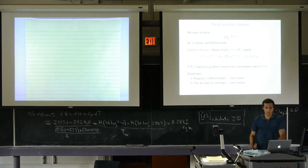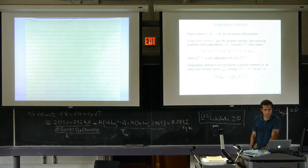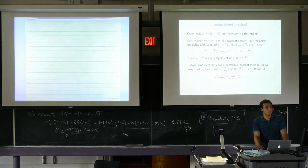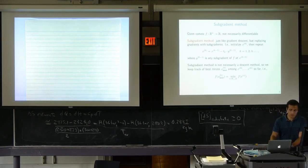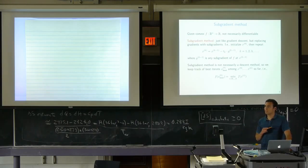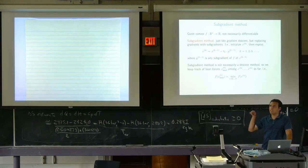This was our problem from last time: we have a convex function f that's not necessarily differentiable. We talked about the most general method we'll learn this semester, the subgradient method. It's applicable whenever you can compute subgradients, which is very often. It looks just like gradient descent: we take an initial guess, compute a subgradient, and update in the direction of the negative subgradient. So x_k equals x_{k-1} minus step size t_k times g_{k-1}, where g_{k-1} is a subgradient of f at x_{k-1}.